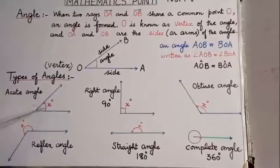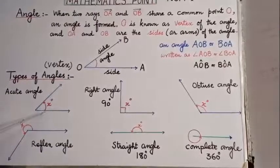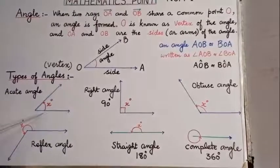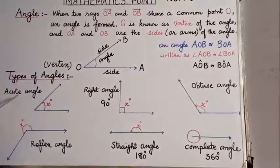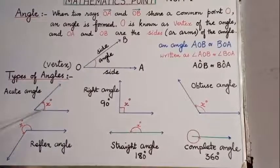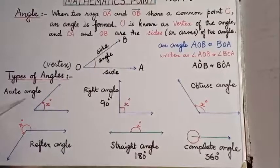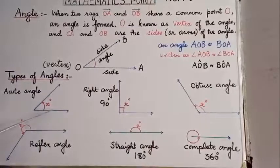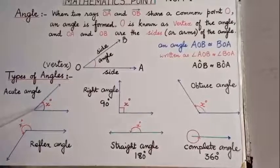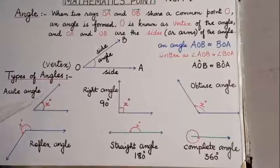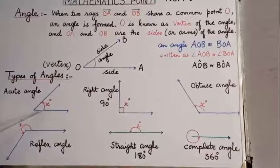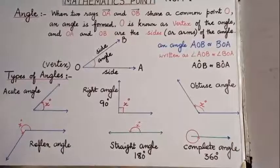Now we come to the types of angles. Look at this figure — this angle is called an acute angle. An acute angle is greater than 0 degrees and less than 90 degrees.